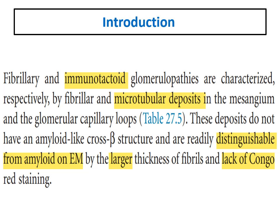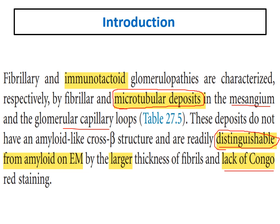Immunotactoid glomerulopathy is characterized by microtubular deposits in the mesangium and glomerular capillary lobes. The most important differential diagnosis for immunotactoid comes with fibrillary and amyloidosis. Immunotactoid and fibrillary are distinguished from amyloidosis by being negative for Congo red stain, which is very important in the diagnosis.